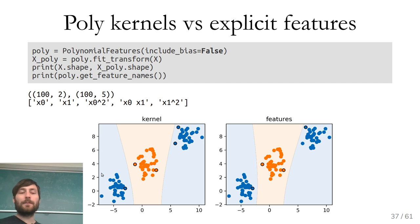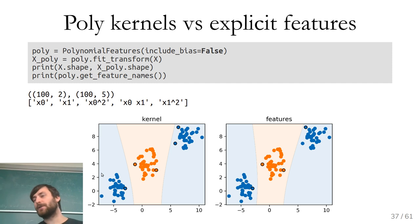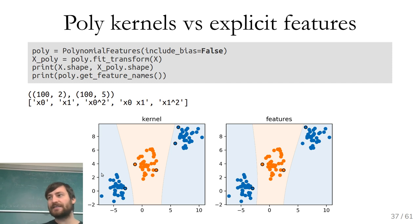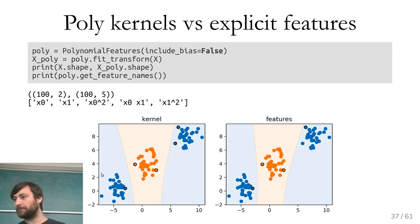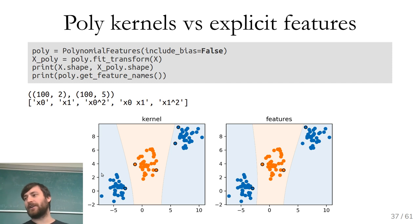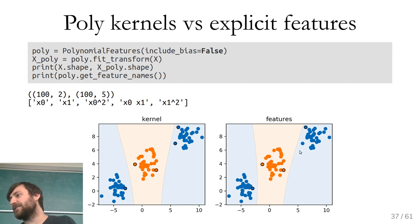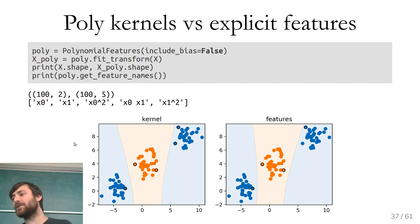On the left I did a kernel SVM with a polynomial kernel; on the right I did polynomial features and then fit a linear SVM. They're not entirely the same but very close. I circled the support vectors — this one is not a support vector with the explicit features, but it is with the kernel, but basically the solutions are quite similar.